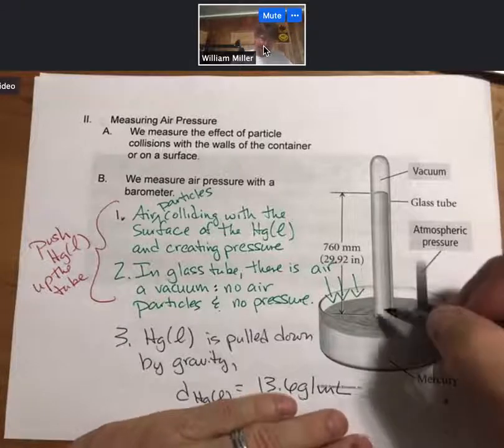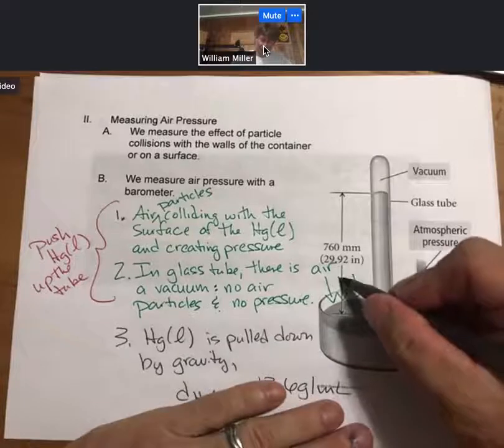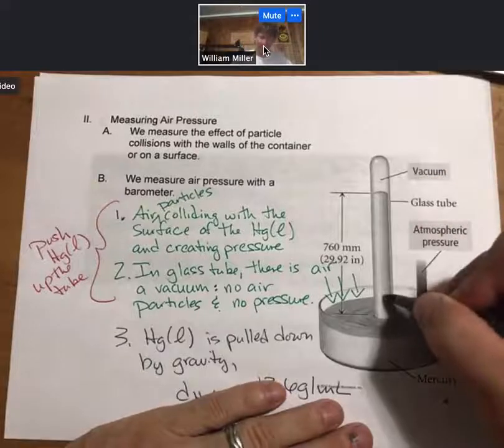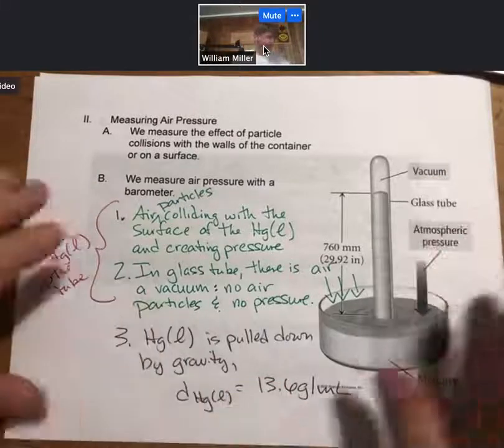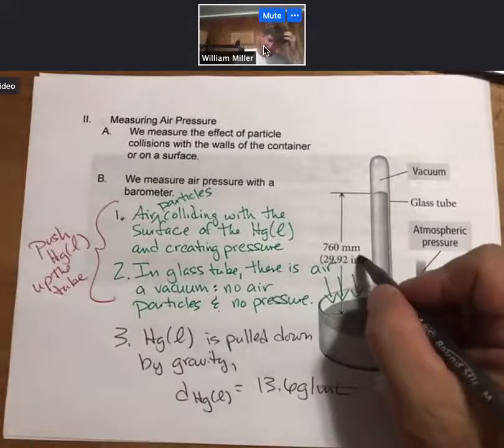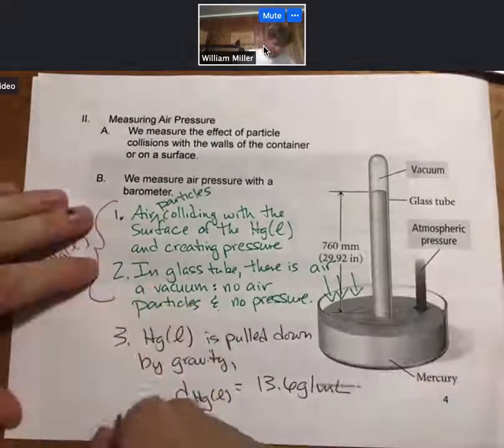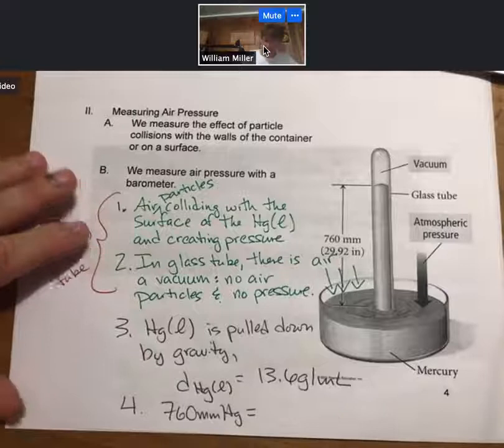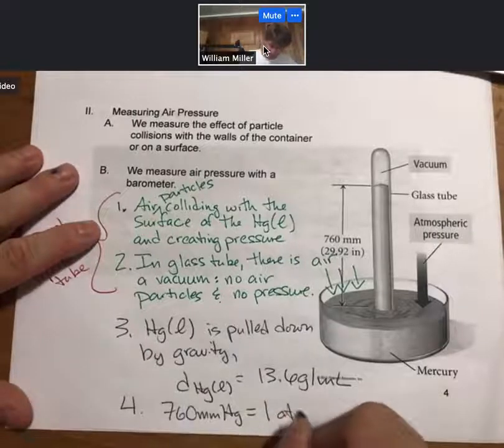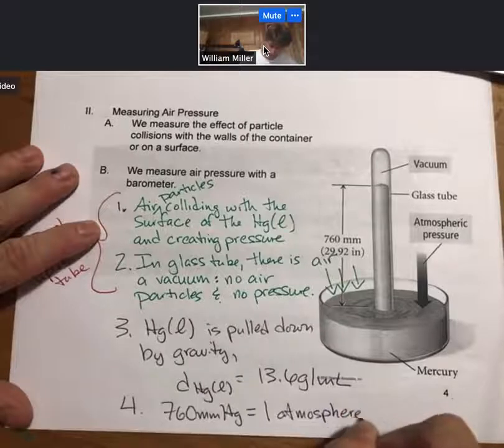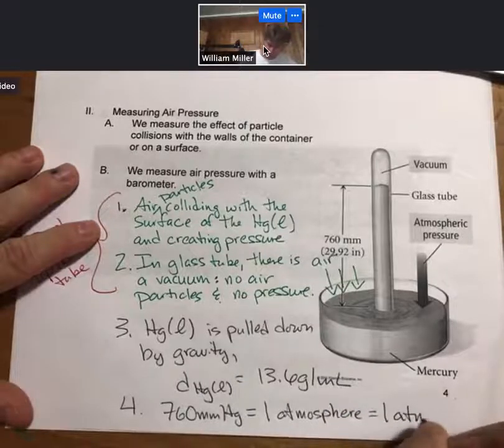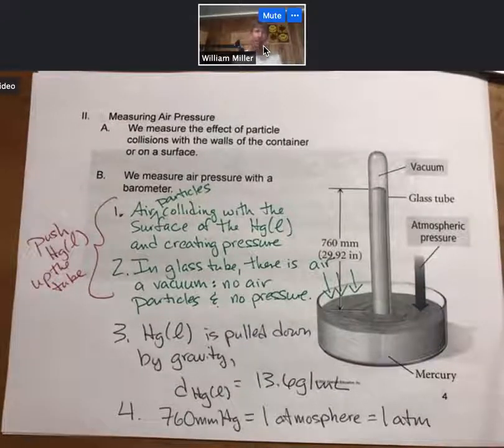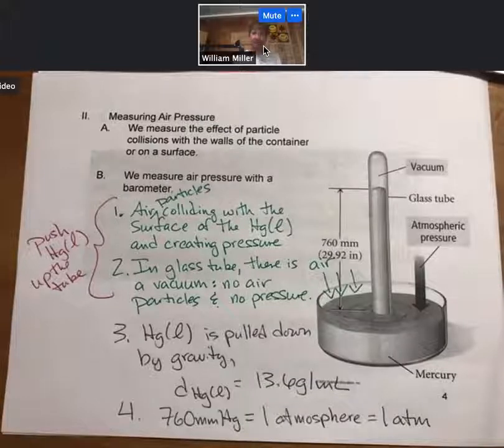A mercury barometer is a pressure or force balance between pressure on the outside pushing it up, then gravity pulling it down. This 760 millimeters of mercury is equal to what's called one atmosphere, abbreviated ATM, and that is the atmospheric pressure at sea level, and it is a definition.